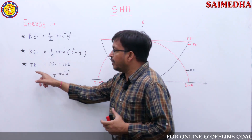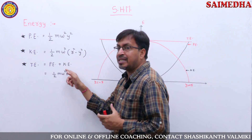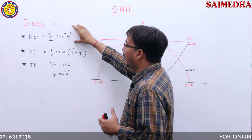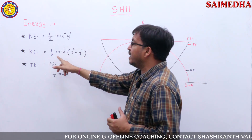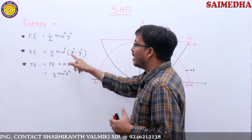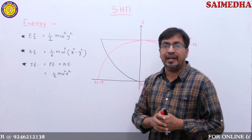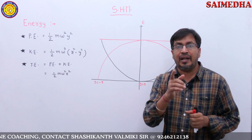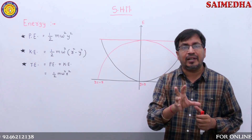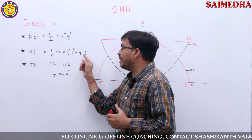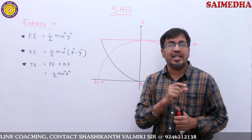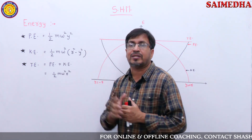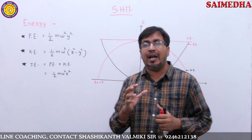Total energy equals potential energy plus kinetic energy. Potential energy is half m omega squared y squared, and kinetic energy splits into half m omega squared r squared minus half m omega squared y squared. So total energy equals half m omega squared r squared. This is an important previous ESET question: total energy is independent of y, which is displacement. Total energy depends only on amplitude r.